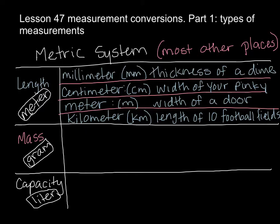Another fractional piece of the meter is the millimeter. Milli means thousand, so the millimeter is a meter chopped into 1,000 little pieces. If I took the meter stick — the width of the door — and chopped it into 1,000 equal pieces, one of those little pieces would be about the thickness of a dime. It's so thin — that's about a millimeter, super tiny.